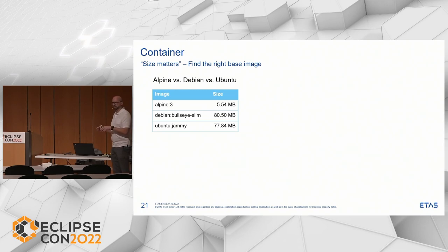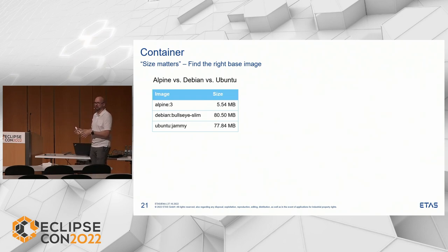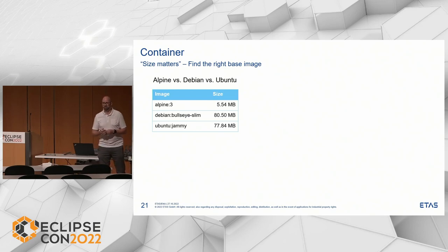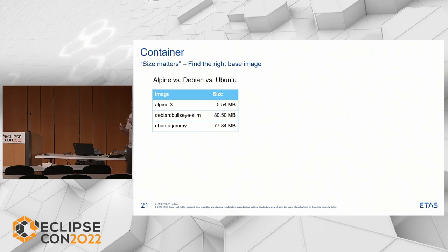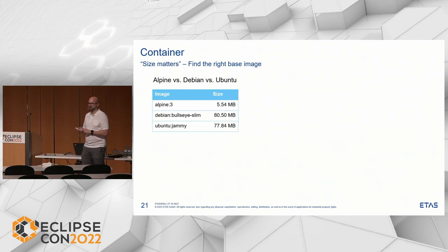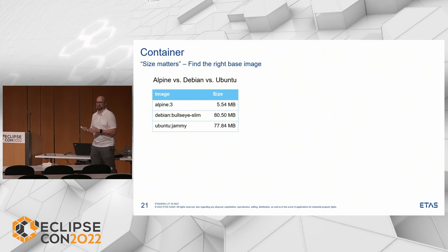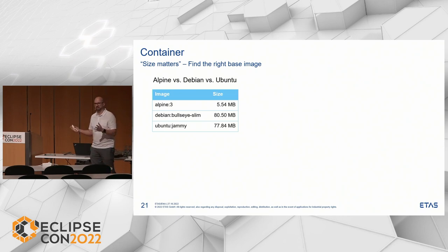The first thing we need to look at is our base image. Looking online, you find comparisons of Alpine versus Debian Slim or Ubuntu Jammy — which is actually quite similar to Bullseye Slim, as Ubuntu is also Debian-based. The main difference is that Alpine uses a libc implementation called musl, which is pretty small, while Debian uses glibc. The effect is direct: Alpine with musl is about five and a half megabytes, while Bullseye Slim with glibc is 80 megabytes.